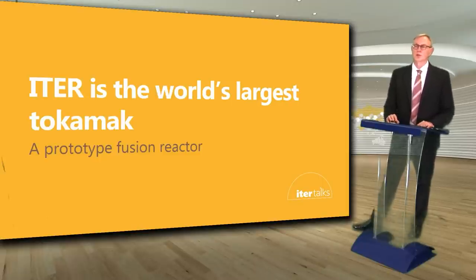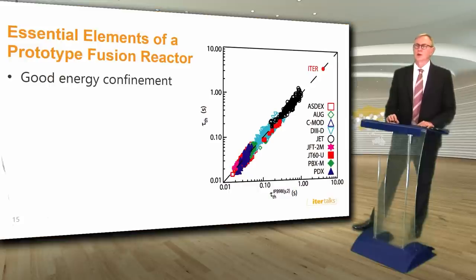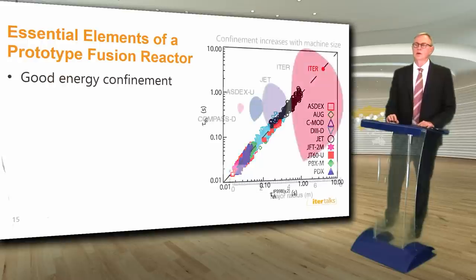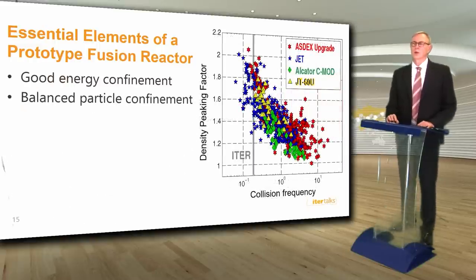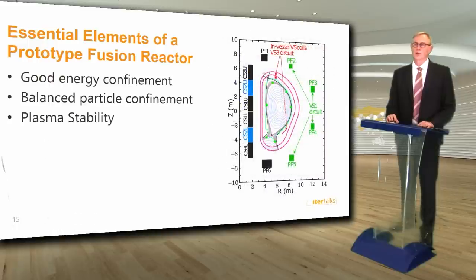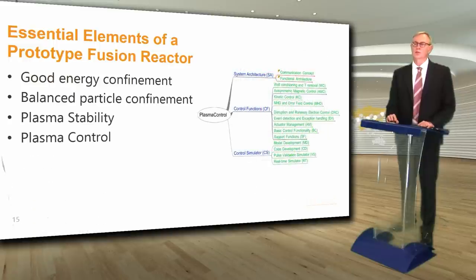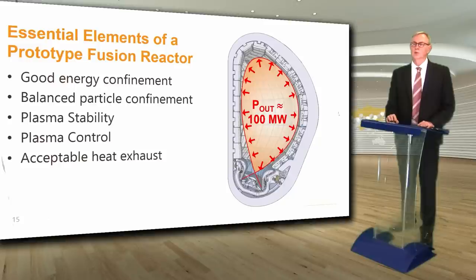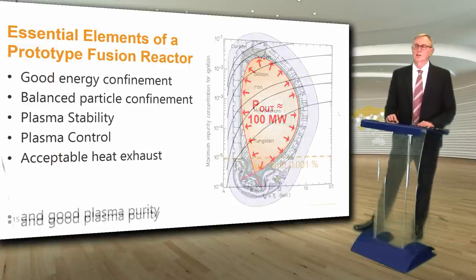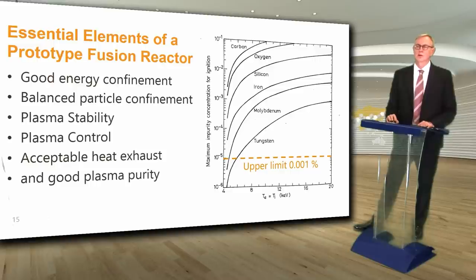ITER is the world's largest prototype fusion reactor. The essential elements of a prototype fusion reactor are: good energy confinement, which has been scaled from existing tokamaks and will be several seconds in ITER — confinement increases with machine size; balanced particle confinement to peak up the fuel particles in the hot plasma core while keeping most impurities out; plasma stability to keep the plasma stable at high performance; a sophisticated plasma control system to maintain stability and fusion burn control; acceptable heat exhaust to avoid overheating the surrounding walls; and good plasma purity to keep from radiating away the energy that heats the plasma.